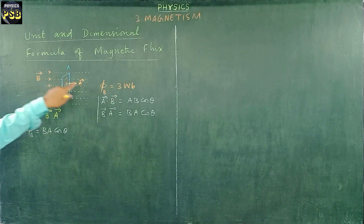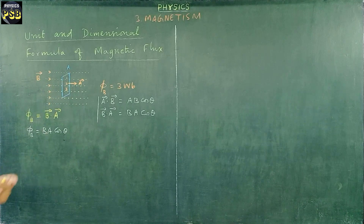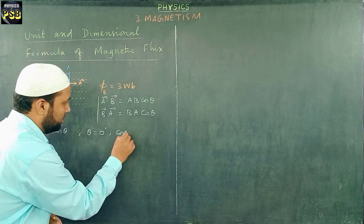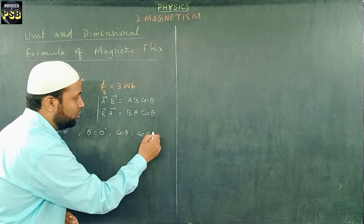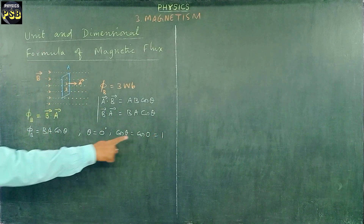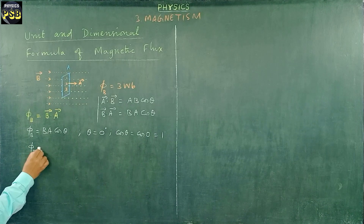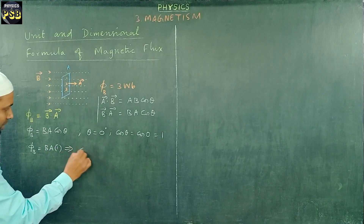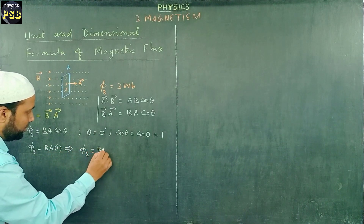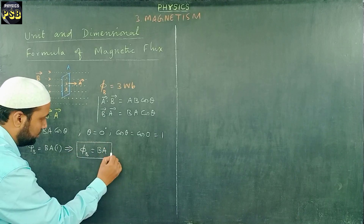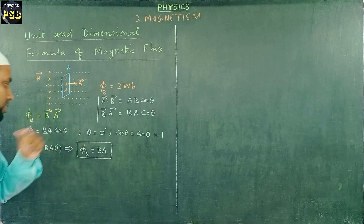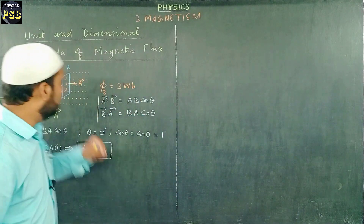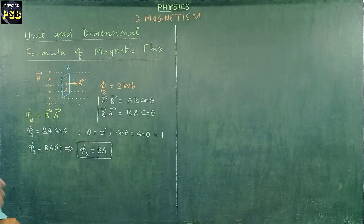This is the angle between the magnetic field and the area vector. From the diagram, the angle is 0. So cos θ = cos 0 = 1. If we substitute that here, we get Φ_B = BA × 1, so Φ_B equals B into A. From this expression, I am going to get the alternate unit and the dimensional formula of magnetic flux.